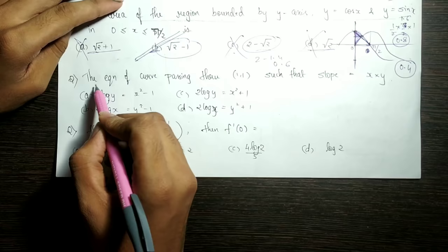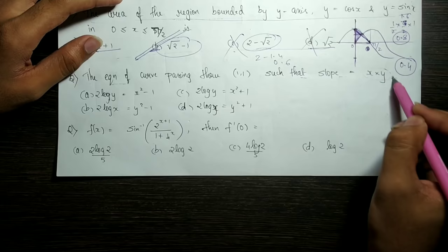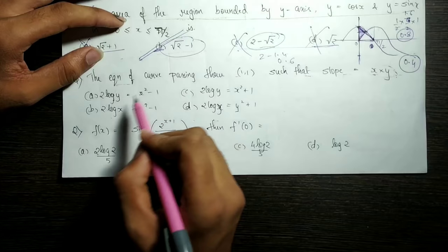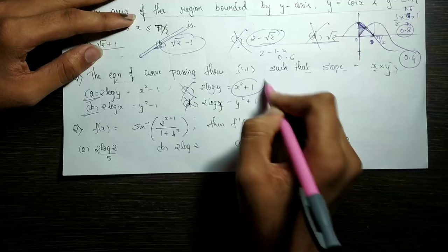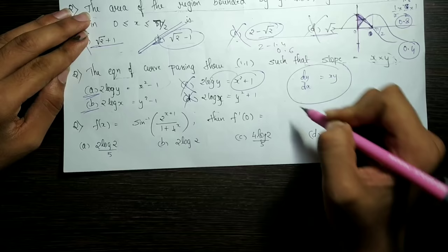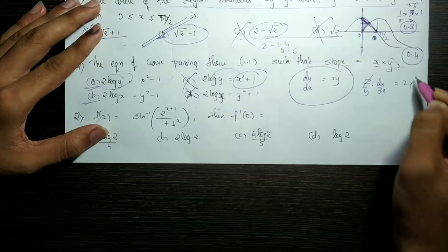Next question: the slope is equal to the product of coordinates x into y. First node (1,1) is passed. Log 1 is 0, so left-hand side is 0. 1 minus 1 is 0, because 1 plus 1 is 2, which is not equal to 0. Let's prove: dy/dx is equal to x into y. Differentiate: 2/y into dy/dx is equal to 2x, so dy/dx is equal to xy — correct.